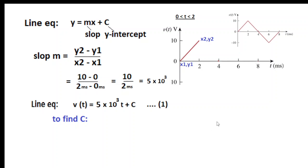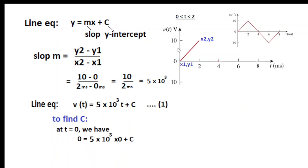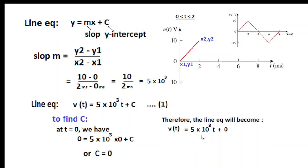I'll tell you the proper method so you won't make mistakes. The technique is: wherever V(t) = 0, we use that time in the formula. At t = 0, V(t) = 0, so substituting: 0 = 5×10³ × 0 + C, giving C = 0. So our equation is V(t) = 5×10³·t for the range 0 to 2 milliseconds — this is equation number one.